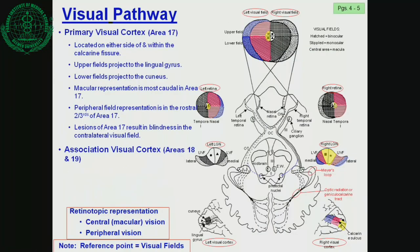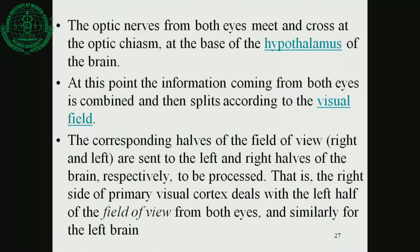Now we will see the mechanism of the visual pathway in detail. The optic nerves from both eyes meet and cross at the optic chiasma, which is located at the base of the hypothalamus. At this point, information coming from both eyes is combined and then split according to the visual field. The corresponding halves of the field of view - right and left - are sent to the left and right halves of the brain respectively to be processed. The right side of the primary visual cortex deals with the left halves of the field of view from both eyes, and similarly for the left brain.